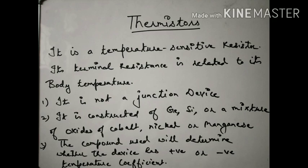The compound used will determine whether the device has a positive or negative temperature coefficient. So the compound determines whether the thermistor has a positive temperature coefficient of resistance or a negative temperature coefficient of resistance. Positive temperature coefficient means as you increase the temperature, resistance also increases. Negative temperature coefficient means as you increase the temperature, resistance decreases. Thermistors can be both types — positive temperature coefficient and negative temperature coefficient of resistance.